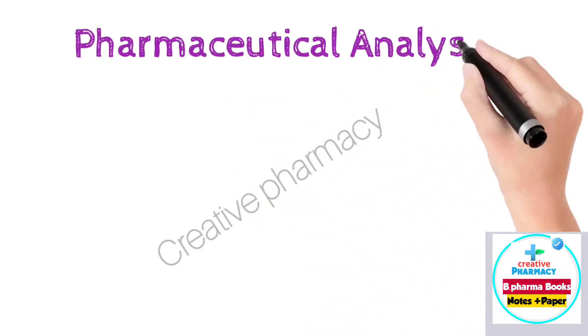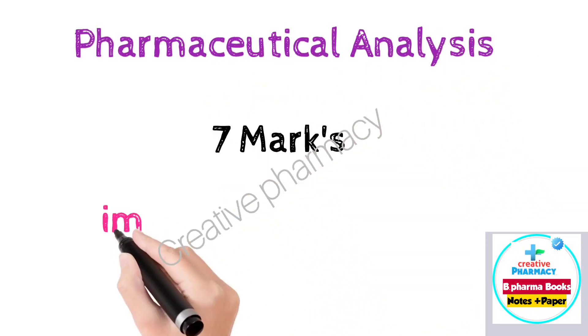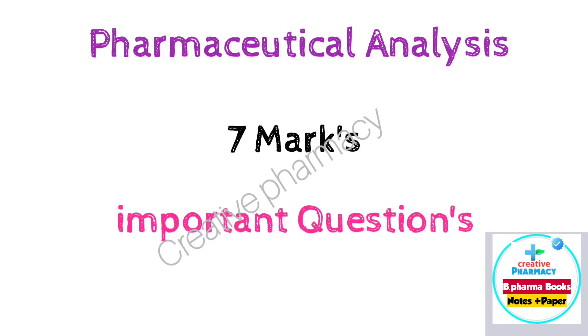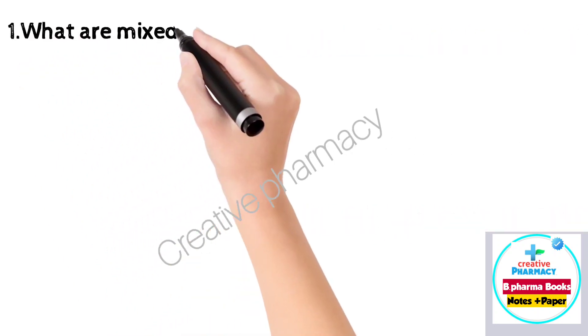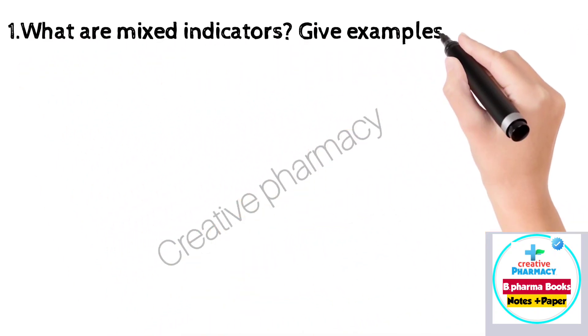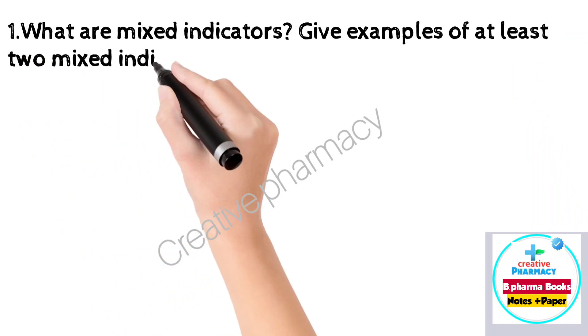Hello friends. Is video me pharmaceutical analysis ke 7 marks important questions discuss kareenge. Question 1: What are mixed indicators? Give examples of at least 2 mixed indicators and their advantage.